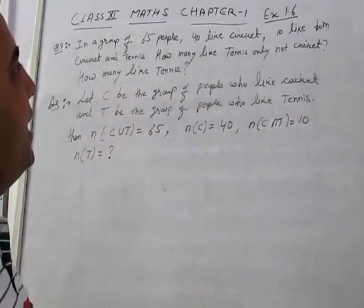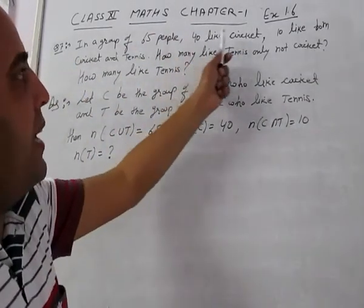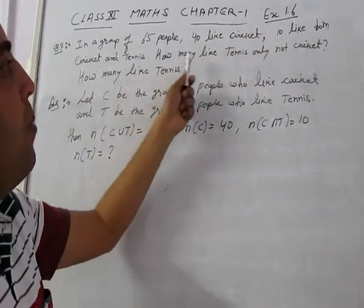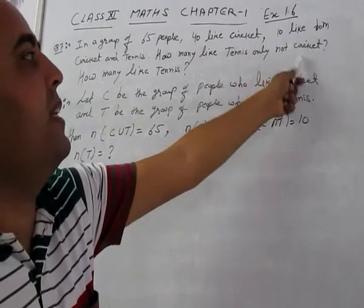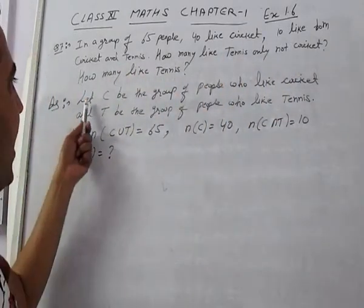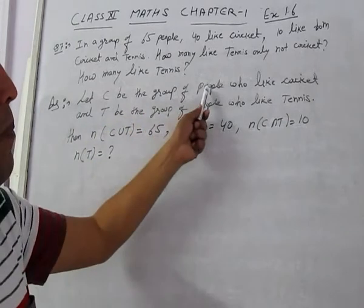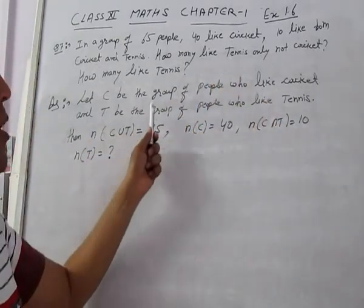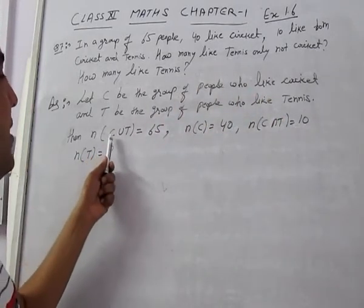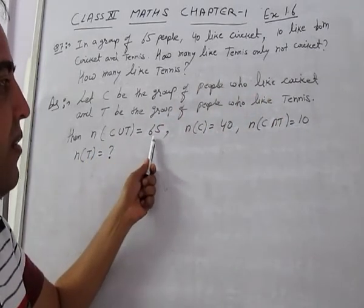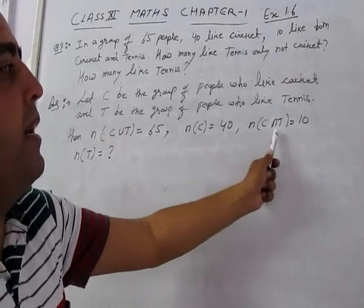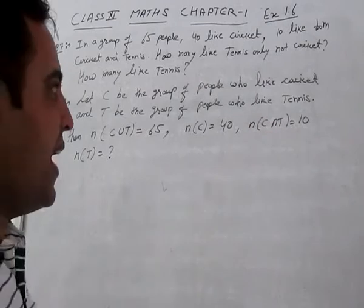Question number 7. In a group of 65 people, 40 like cricket and 10 like both cricket and tennis. How many like tennis only (not cricket), and how many like tennis? Let C be the group of people who like cricket and T be the group of people who like tennis. Then n(C∪T) = 65, n(C) = 40, n(C∩T) = 10.